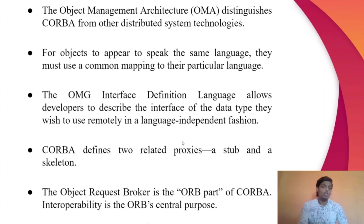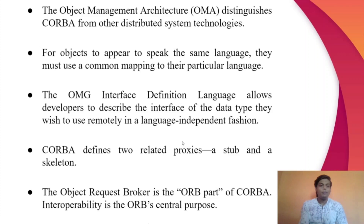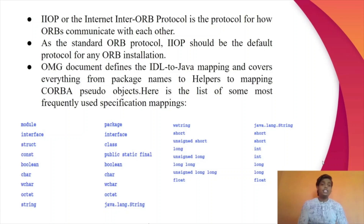CORBA defines two related proxies: iStub and Skeleton. iStub is the client-side proxy and iSkeleton is the server-side proxy. Both proxies hide the use of the ORB from the client and the server. The Object Request Broker, or ORB, is the ORB part of CORBA. Interoperability is the ORB's central purpose. All CORBA-enabled objects must use an ORB to make or receive method requests, but those same objects rarely see the ORB directly. The next term is IIOP, or Internet Inter-ORB Protocol, which is the protocol for how ORBs communicate with each other. The average developer does not need to know anything about IIOP. As the standard ORB protocol, IIOP should be the default protocol for any ORB installation, although it is not the only choice.